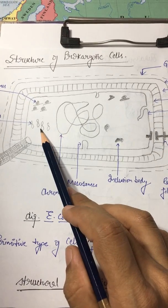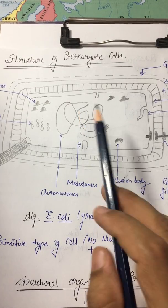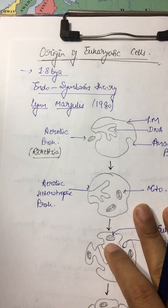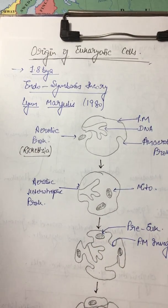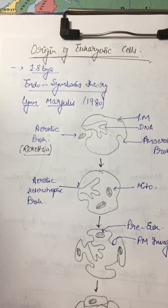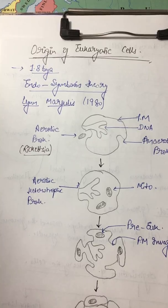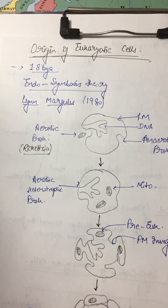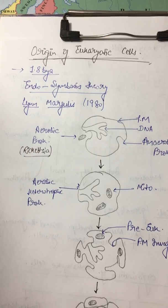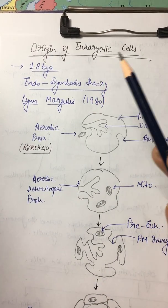Then we have plasmid, this is plasmid and this chromosome. This provides the genetic information for cell structure and metabolism. Now how did the eukaryotic cells evolve? Eukaryotic cells originated 1.8 billion years ago. Several theories have been given to explain the evolution, and the most widely accepted one is endosymbiosis theory.